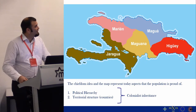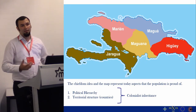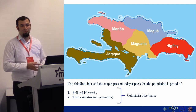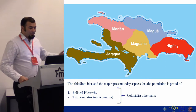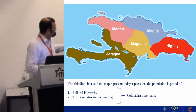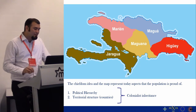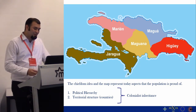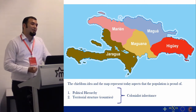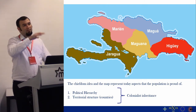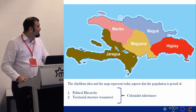The point with this map is that in the 20th century it has been standardized as the definitive information on how the indigenous population lived. The chiefdom idea and the map represent today something that the population is proud of: first, because it shows political hierarchy in the sense that the cacique is equal to the king with a full hierarchical relation; and second, because the territorial structure can be interpreted as countries.